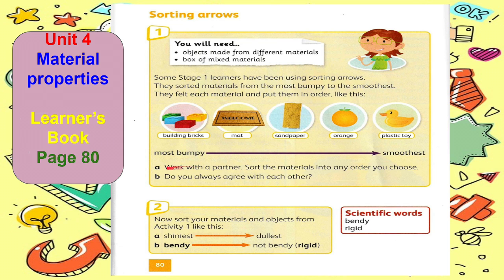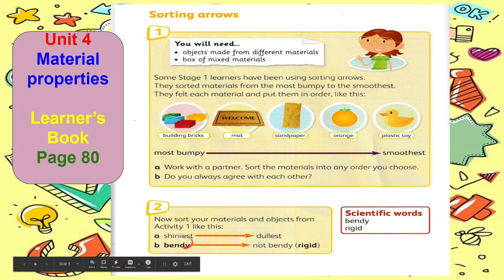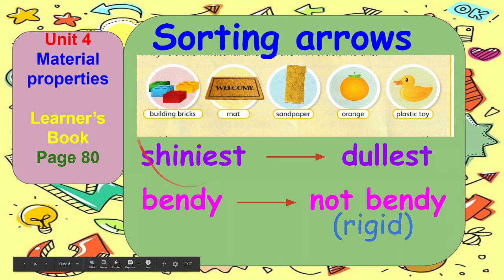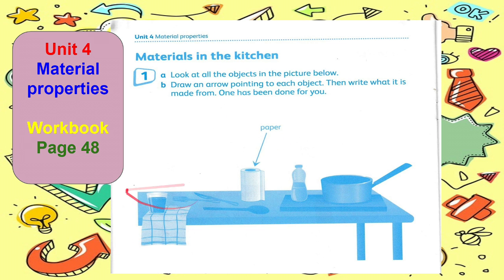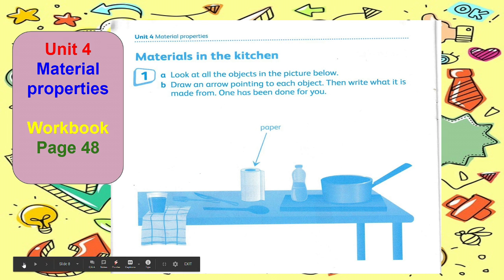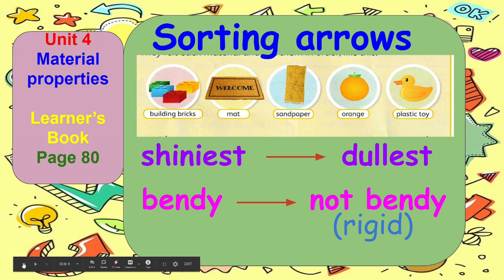Now, can you try to sort your materials and objects from shiniest to dullest? What about from bendy to not bendy or rigid? You can also sort or put your materials in order from most tall to shortest, or from smallest to biggest, or from most rigid to bendy. There are a lot of ways how you could group and sort these different objects.